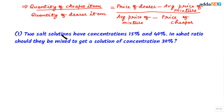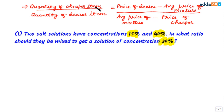Let's take an example. We have two solutions with concentrations of 15% and 40%. The question asks: in what ratio should they be mixed to get a solution of concentration 30%? Using the allegation formula, what we have to find is the quantity of cheaper item divided by quantity of dearer item.